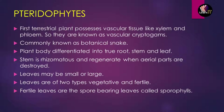The stem regenerates only when aerial parts are destroyed. Leaves can be of different types, ranging from small to large. Leaves are also of two types: vegetative and fertile. Fertile leaves are spore-bearing — these are called sporophylls and help in the reproductive part of the plant.